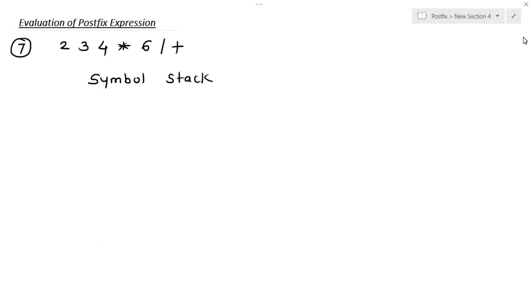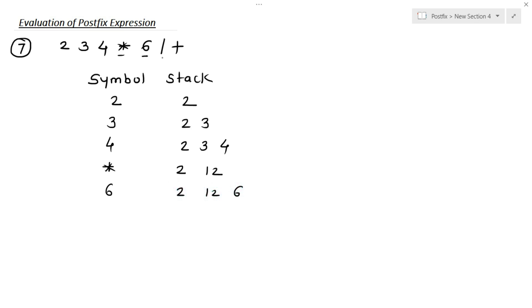Let's solve another example: 2 3 4 multiplication 6 division plus. The first symbol is 2, into the stack. Second is 3, into the stack. Then 4; in the stack we have 2, 3, and 4. The next symbol is multiplication; top of the stack are 4 and 3, so 3 multiplied by 4 equals 12. Then 6 is added; the stack has 2, 12, and 6. Then division: 12 divided by 6 equals 2. Now we have only 2 operands left — 2 and 2 — and we reach the end of the expression. So 2 plus 2 equals 4. This is our final answer.